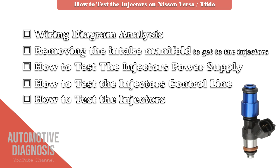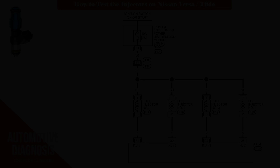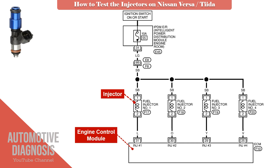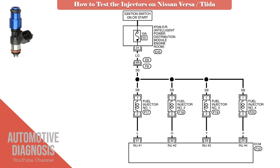Let's start by having a look at the injectors wiring diagram on Nissan. Here you see the wiring diagram for the injectors. Let's check the components first. This is the engine control module. This one is the injector. And this is the injector fuse, which is in the engine fuse box. As soon as you turn the ignition switch on, injectors will get the power from the injector fuse. Then while cranking or when the engine is running, ECM activates the injectors by completing the circuit through the control line.